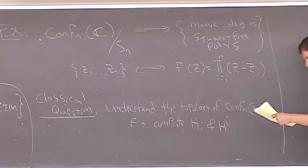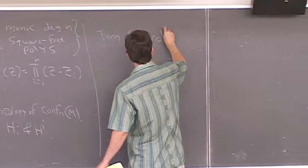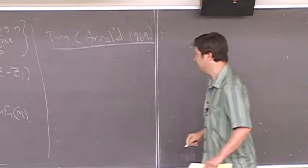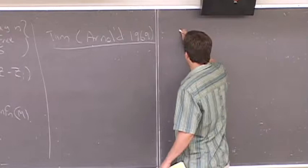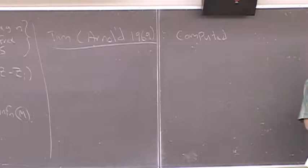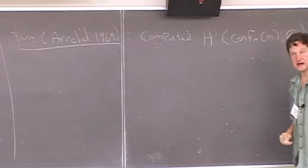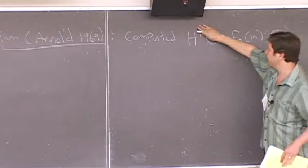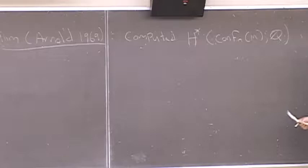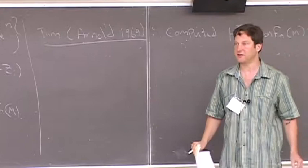A theorem due to Arnold in 1969, and later Fred Cohen integrally in his PhD thesis in '72. Arnold computed the cohomology of the space of ordered configurations in the plane with rational coefficients. He gave a presentation for that algebra. In general, there are very few explicit computations. For example, for a genus 2 surface, the space of configurations of n points — I don't think the cohomology is known explicitly, like the dimension of the i-th cohomology group.